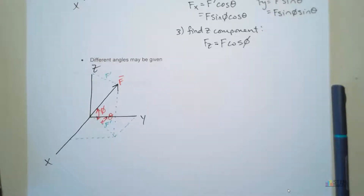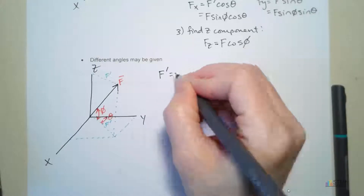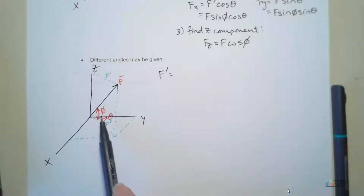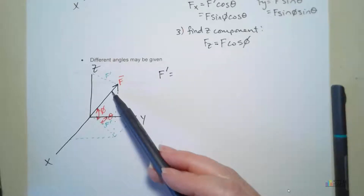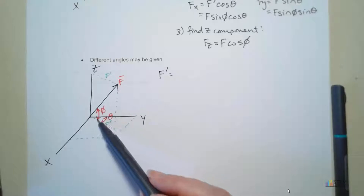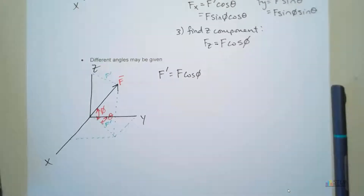Let's use those angles and see if we can figure it out. The first thing you want to do is find F prime. Remember, F prime is along this line right here. Notice we've got phi and we've got this force vector. We're going to take the magnitude of this vector and do cosine of phi because F prime is adjacent to that angle. So we'll have F cosine phi for F prime.